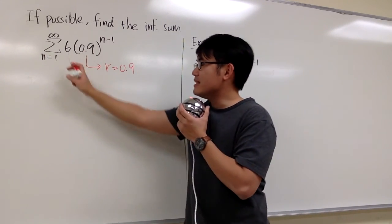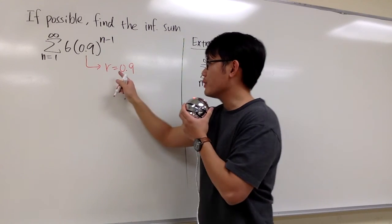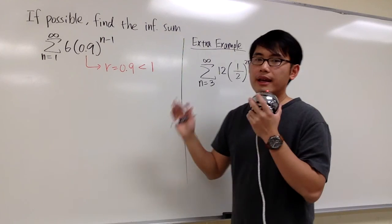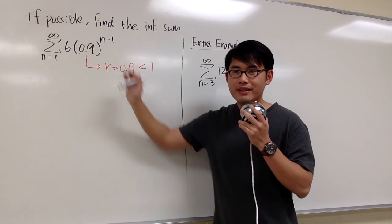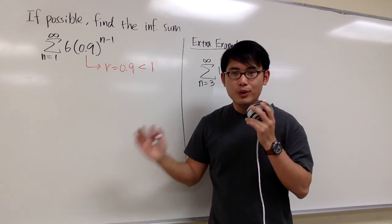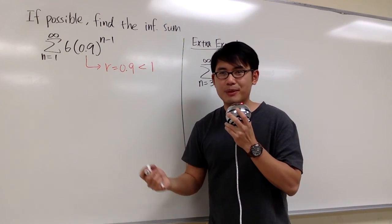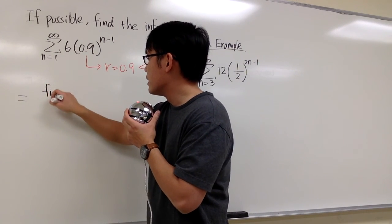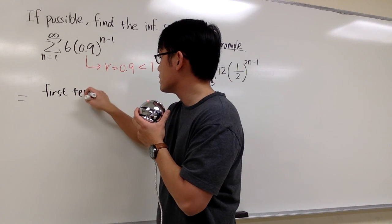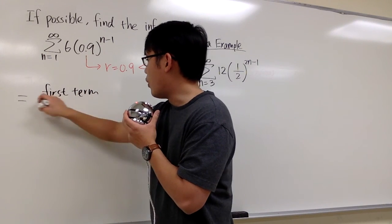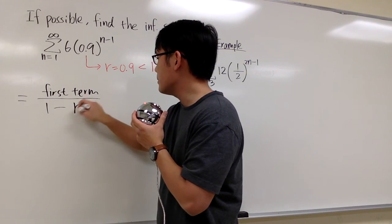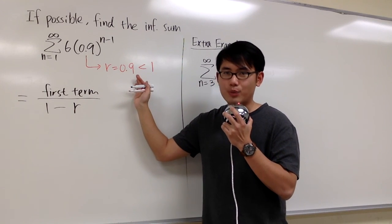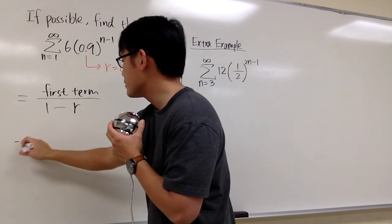Because this is an infinite geometric series and the common ratio is 0.9, which is less than 1, this series has to converge. We also know how to find the sum: the sum is going to be the first term divided by 1 minus the common ratio. This only works when r is less than 1.